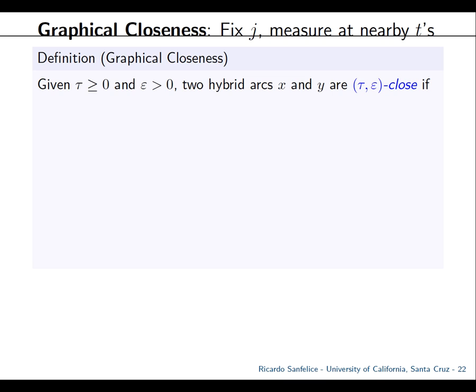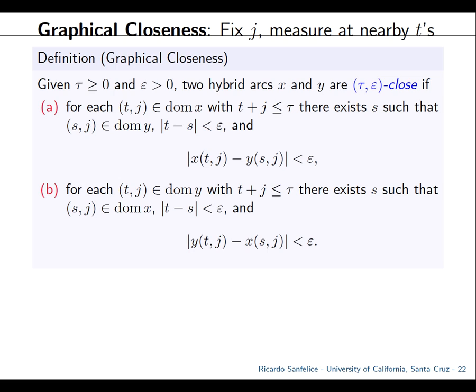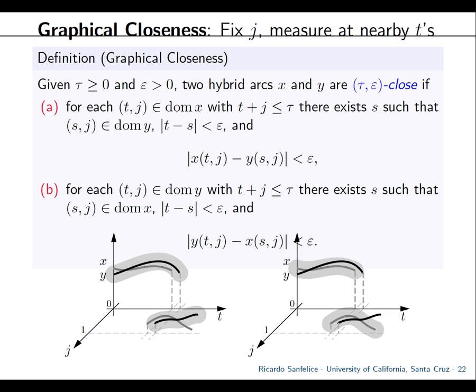The idea is to look at trajectories — perturbed and unperturbed — for the same j, putting neighborhoods around the perturbed trajectory and checking if the unperturbed one is contained. We call this graphical closeness, defined by set convergence. Given a horizon tau for flow and jumps and an epsilon, two arcs x and y are tau-epsilon close if for every (t,j) in the domain of x with t+j ≤ tau, there exists a nearby (s,k) in the domain of y such that the arc values are within epsilon — and vice versa. This is related to the Hausdorff distance on hybrid time cross state space.